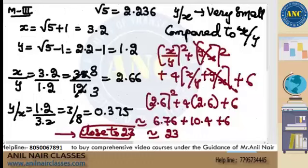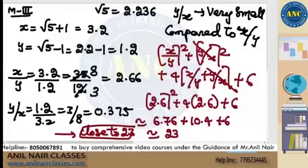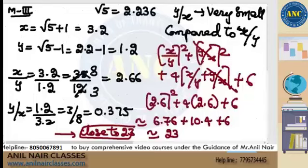Recap of the approximation method: x = √5+1 ≈ 3.2, y = √5−1 ≈ 1.2, x/y ≈ 2.66, y/x ≈ 0.375. Since 0.375 is very small compared to 2.66, we ignored y/x. (x/y)² = 6.76, plus 4×2.6 = 10.4, plus 6 gives approximately 23. The closest answer option is 25. If the result had been closer to 23, you could include the y/x term as well.